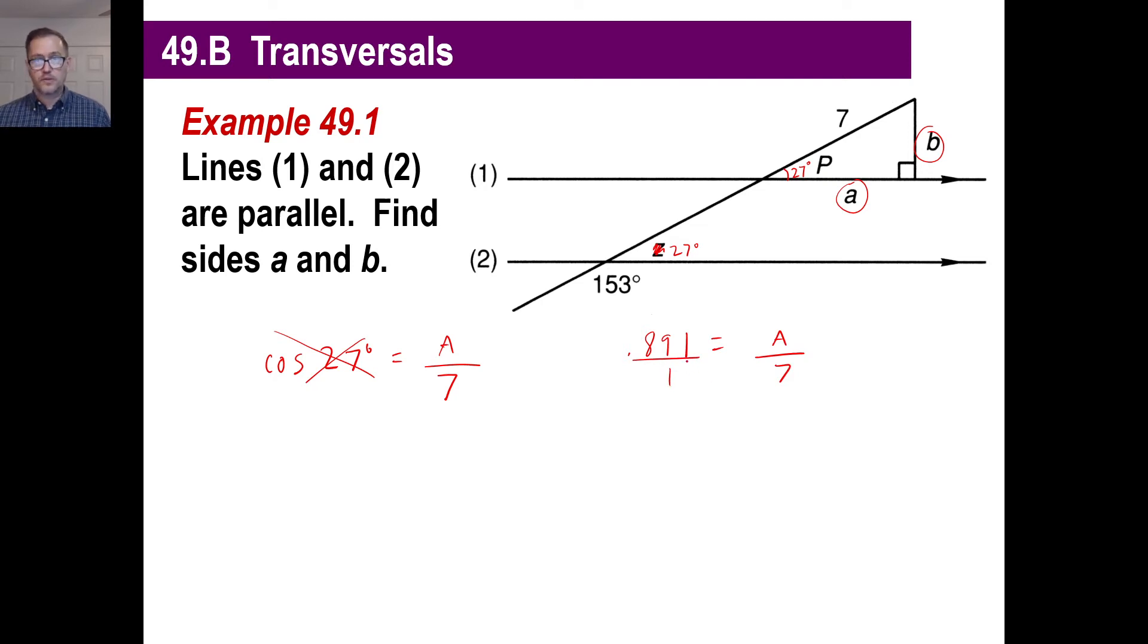So, I got 0.891 equals A over 7. And, of course, we cross multiply to find out what A is. Just keep that in the calculator the way it is. And, let's go times 7. And, the answer is, I'll say, 6.24. So, for A, we have 6.24. Now, we need B.